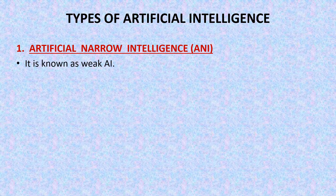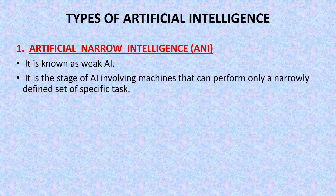Artificial narrow intelligence is known as weak AI. It is a stage of AI involving machines that can perform only a narrowly defined set of specific tasks. Artificial intelligent machines can do only those tasks for which they are programmed. We cannot expect any task from artificially intelligent machines without giving any data or programming related to that task. That's why they can perform only a narrowly defined set of tasks.